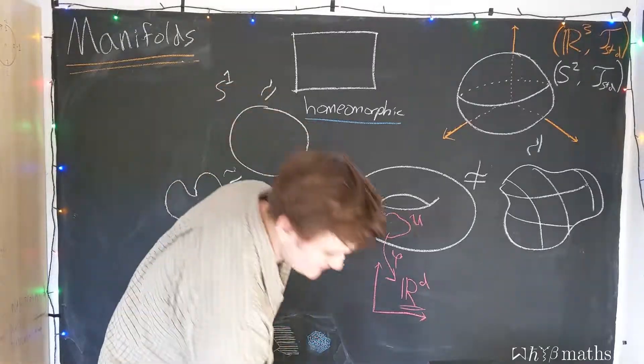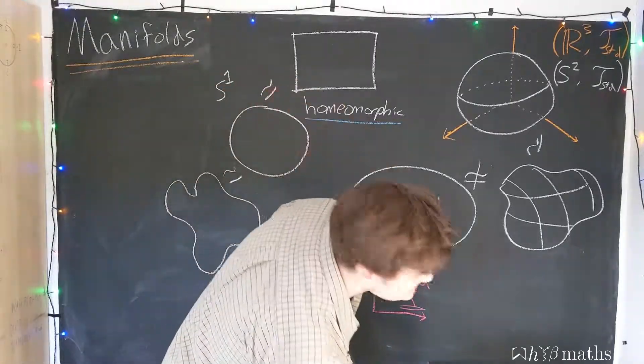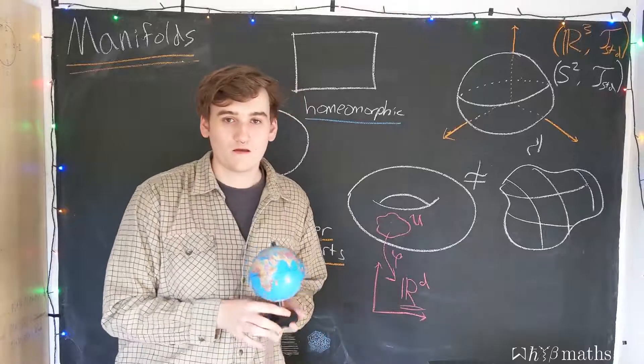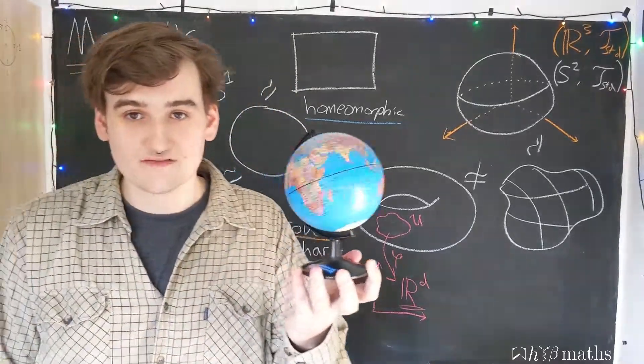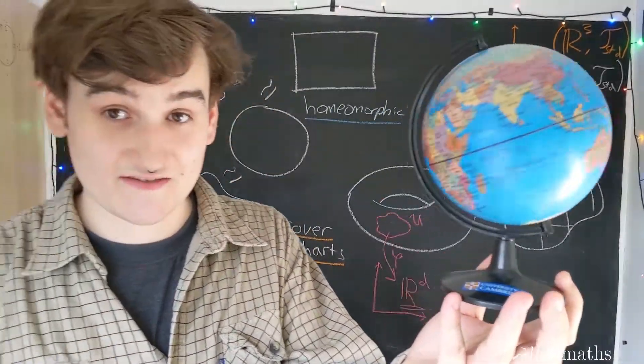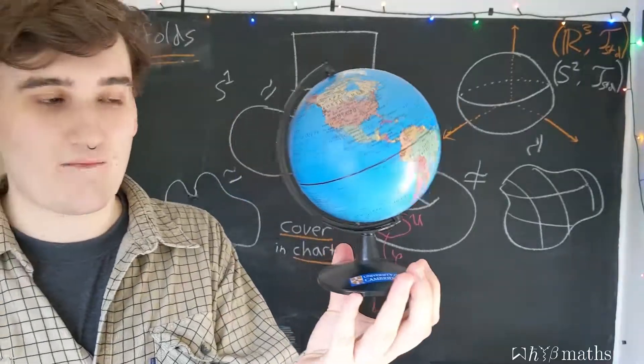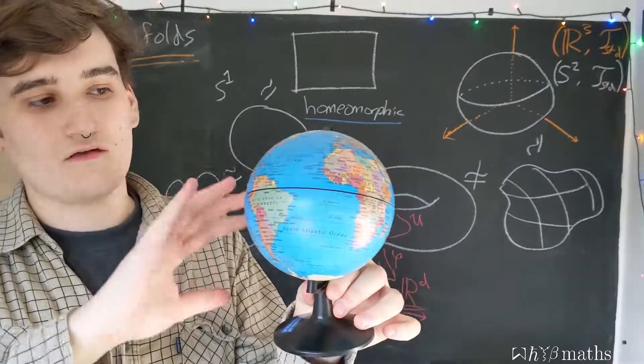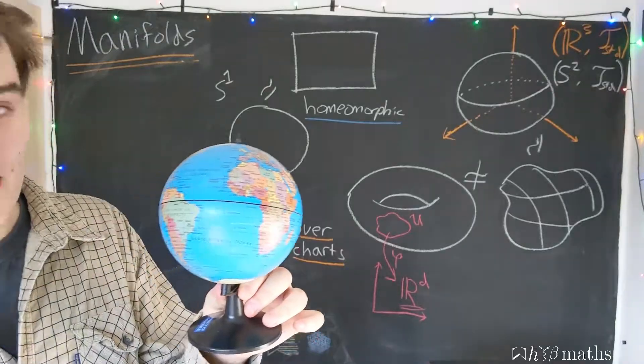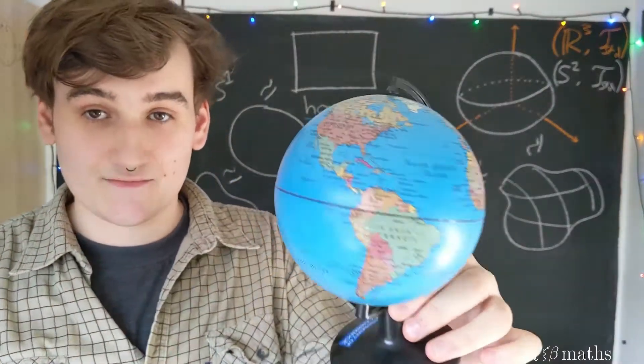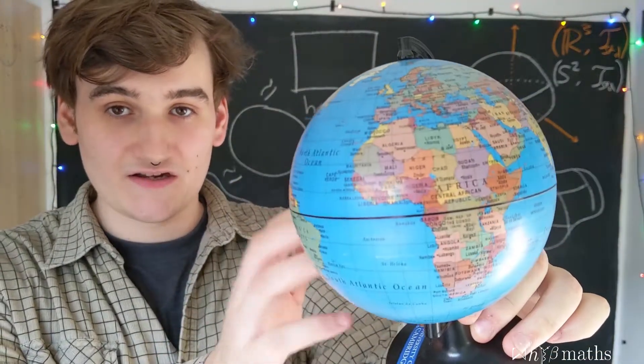So, that was a bit of an abstract discussion. Let's consider a concrete example. So, if you consider the surface of the Earth, which is a sphere, to be our manifold, we know that, or we understand this manifold as being the set of all the possible locations on the Earth.